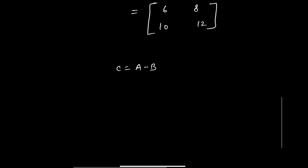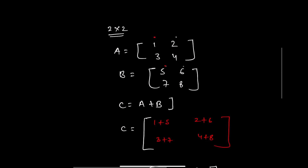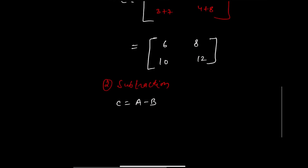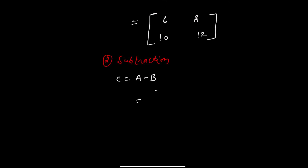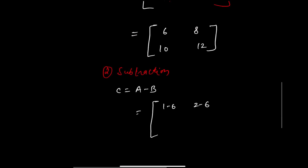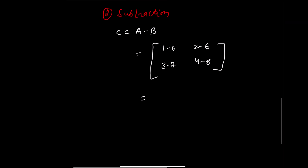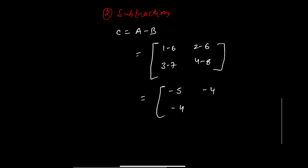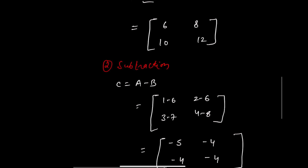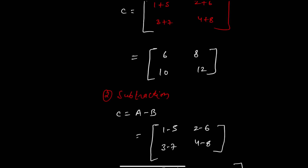Similarly, subtraction is also an element-wise operation. Let C equal A minus B. We compute: 1−5, 2−6, 3−7, and 4−8. The result is −4, −4, −4, and −4. So addition and subtraction are element-wise operations — the same as what we do in scalar operations.